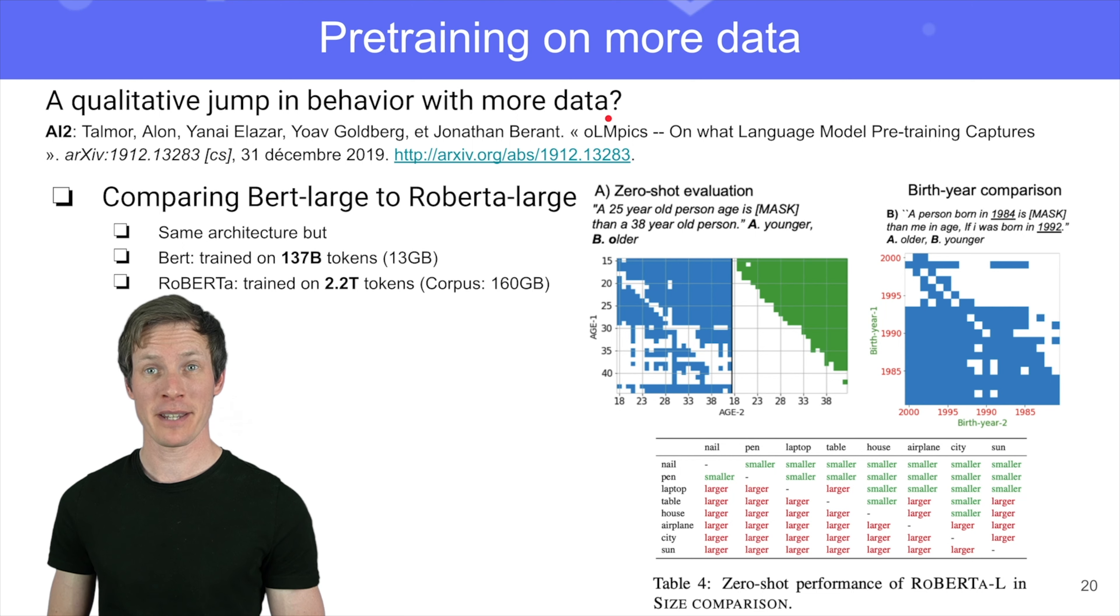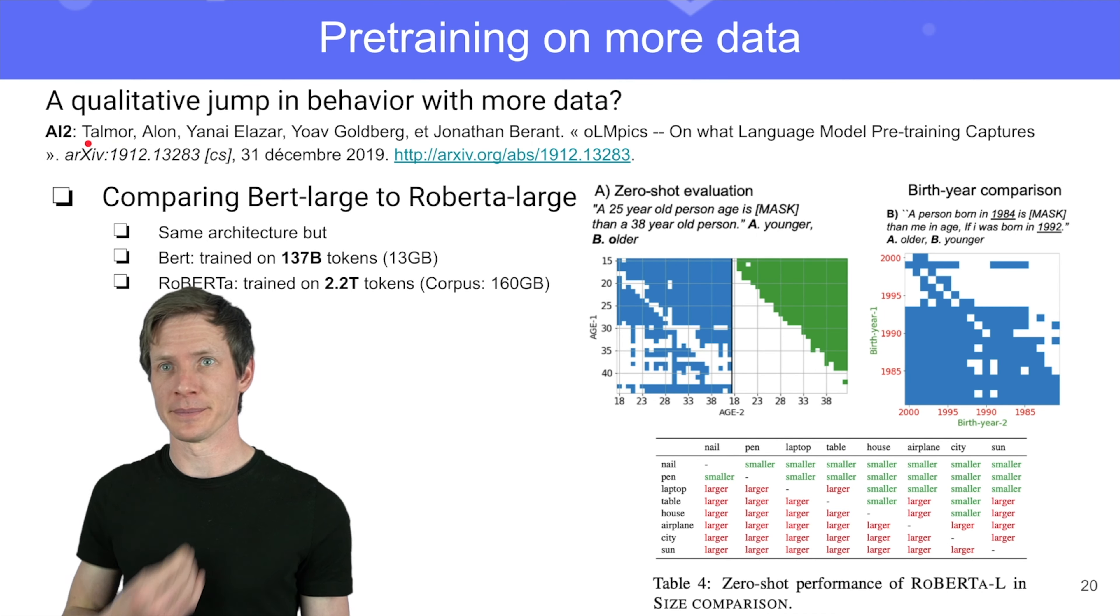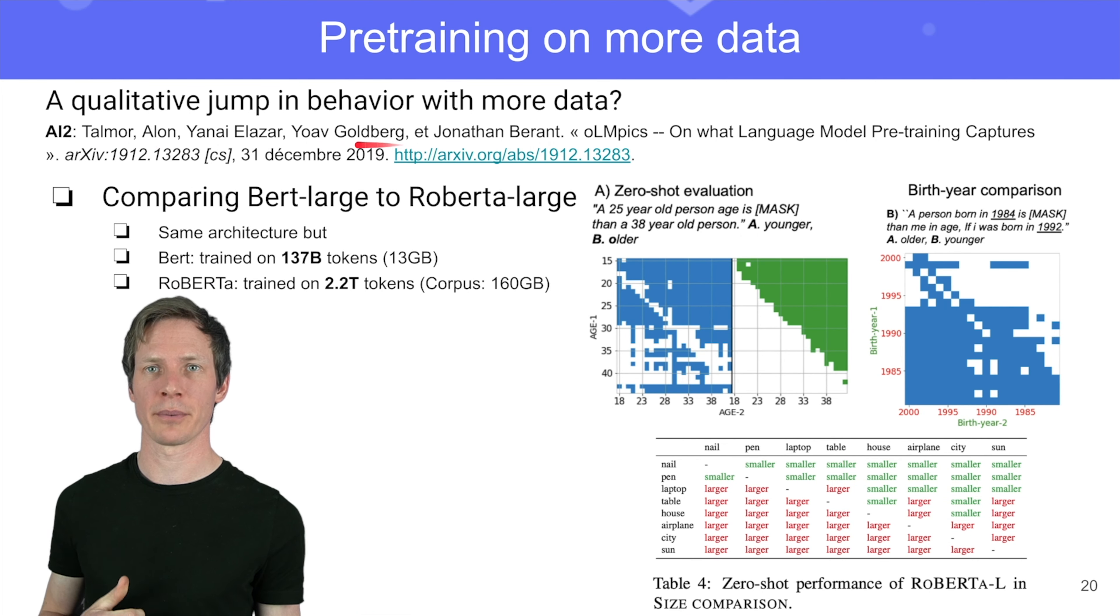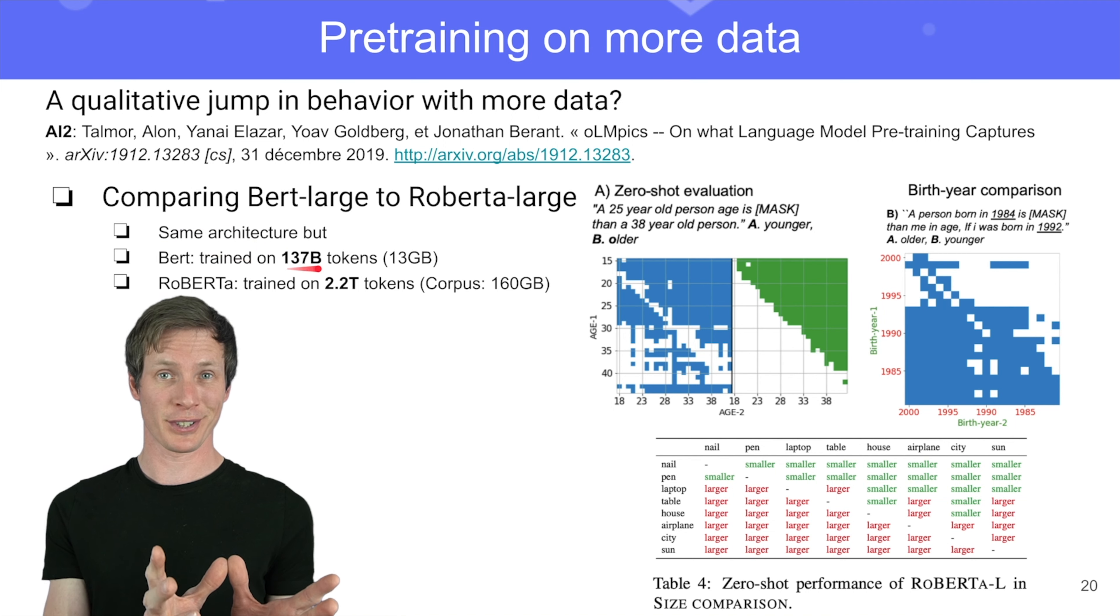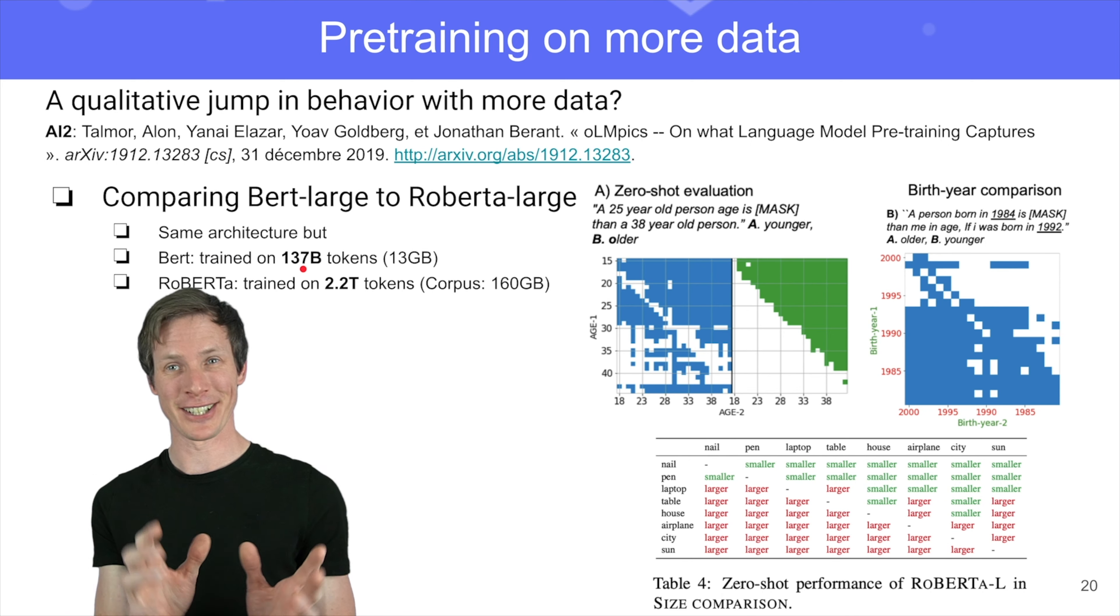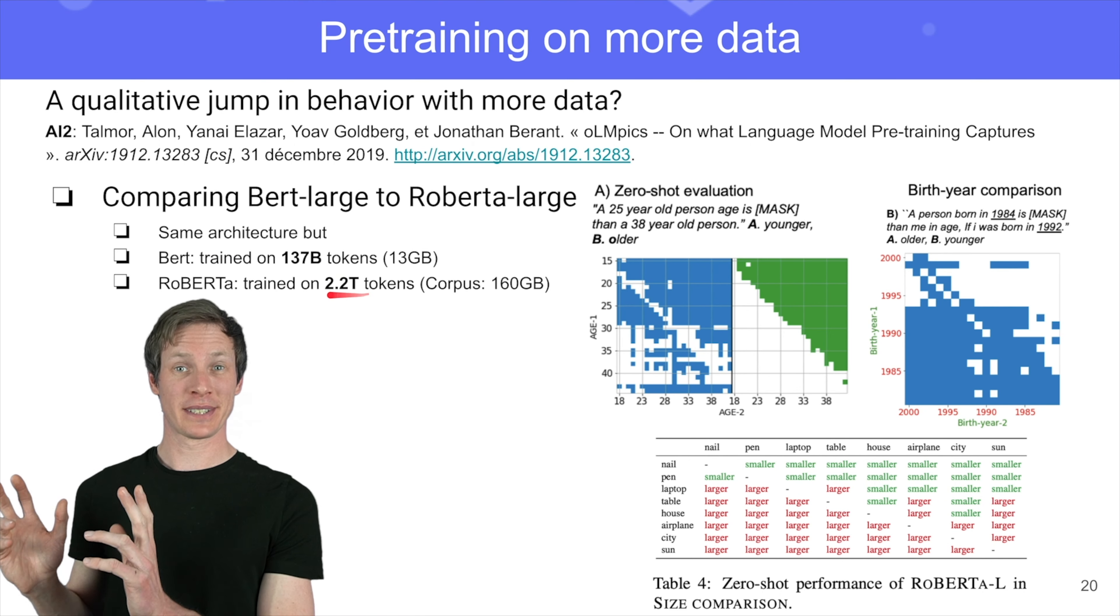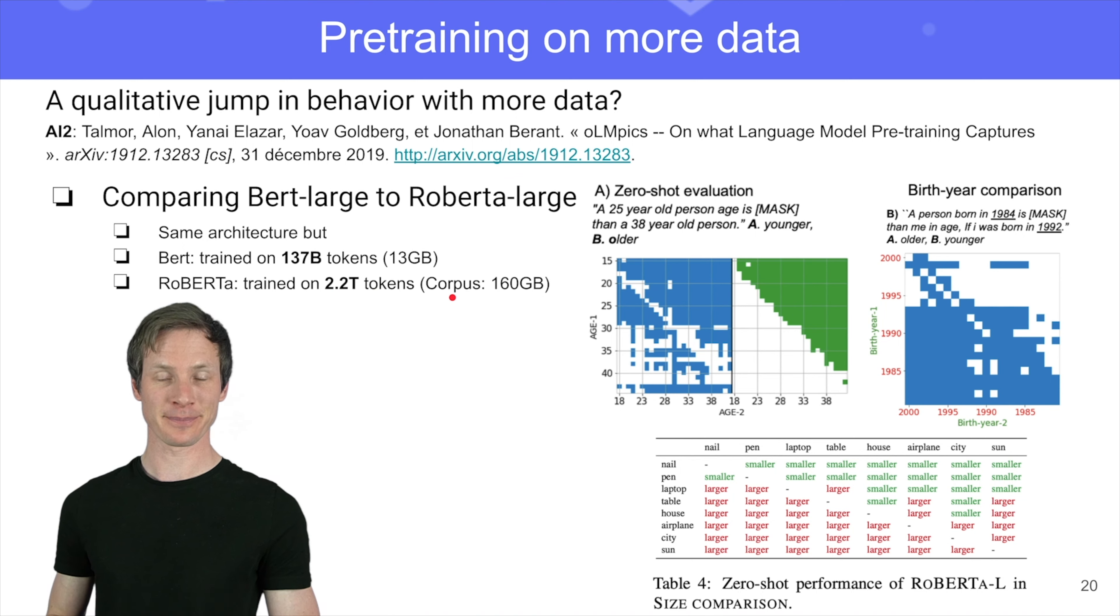And there's this nice paper from AI2, from Alan Talmor and the people at AI2 Israel. They show that actually just comparing BERT and RoBERTa, you can notice a phase transition. So comparing BERT to RoBERTa is interesting because they have the same architecture. They are exactly the same models, just that BERT was trained on only 137 billion tokens only, and RoBERTa was trained on 2.2 terra tokens. So RoBERTa was really trained on a lot more data.